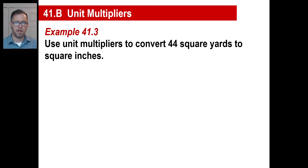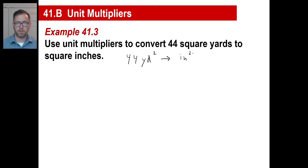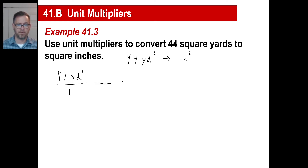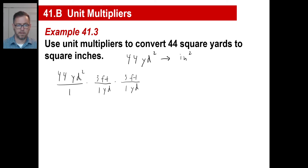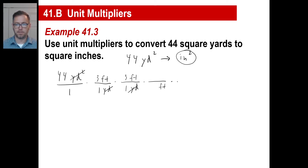Convert 44 square yards to square inches. Write: 44 square yards to square inches. Start with 44 square yards. Because there's a two on yards, you're going to have to have two instances of yard in the denominator to undo this. One yard is three feet, so one yard is three feet — used twice. Those cancel out the two yards. But we're not done — they want square inches and we only have feet. We have two instances of feet in the numerator, which means we need two instances of feet in the denominator to cancel those out.